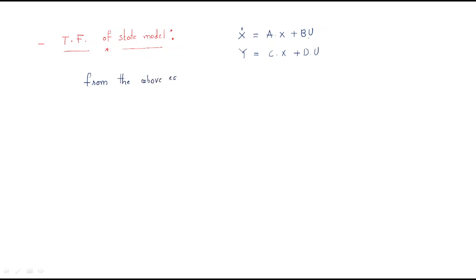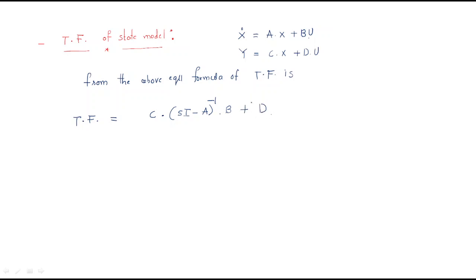From the above equations, the transfer function formula is: T(s) = C(sI - A)⁻¹B + D. Here C is the output matrix, (sI - A)⁻¹ is the inverse matrix related to the state, B is the input vector, and D is also a vector representing the direct input term. This is the transfer function derived from the state model.